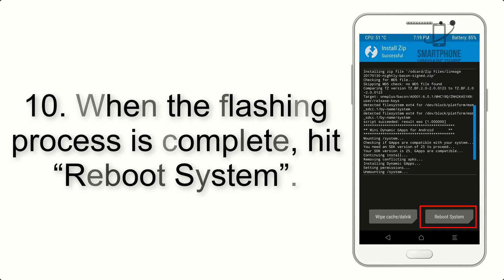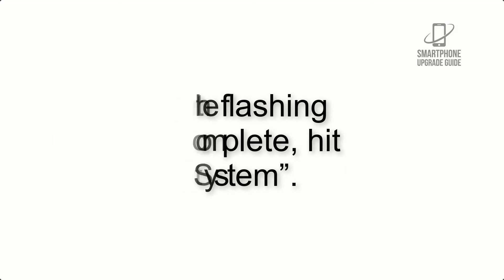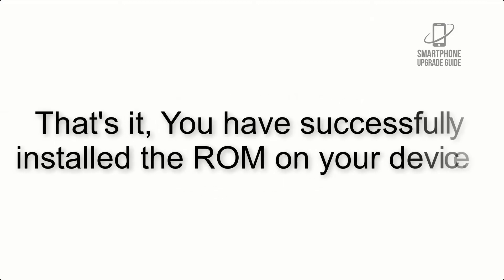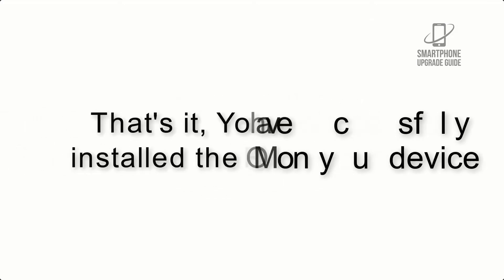Step 9: after GApps flashing completes, select Wipe Cache and Dalvik from the bottom left side of the screen and swipe to wipe. Step 10: when the flashing process is complete, hit Reboot System. That's it — you have successfully installed the ROM on your device.